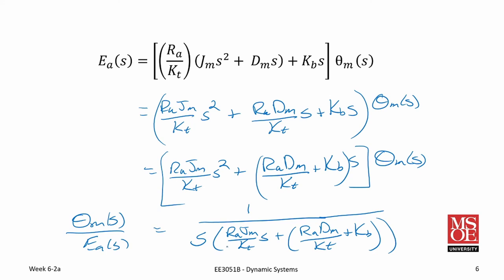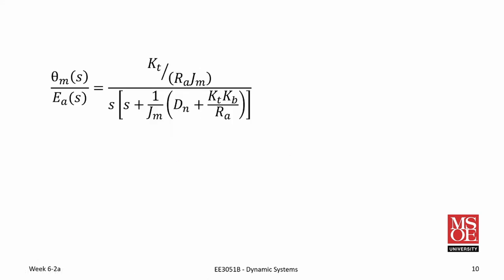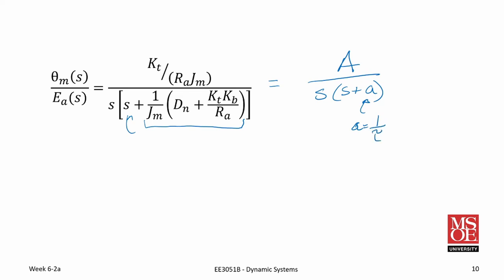We typically want to clear the leading coefficient. Therefore we multiply both top and bottom of this equation by K sub T times S over R sub A times J sub M. This gives us a transfer function of the form A over S times the quantity S plus A. This should look very familiar — this A acts like our time constant where A equals 1 over tau for a first order system. Therefore, tau for our DC motor is equal to 1 over that term.